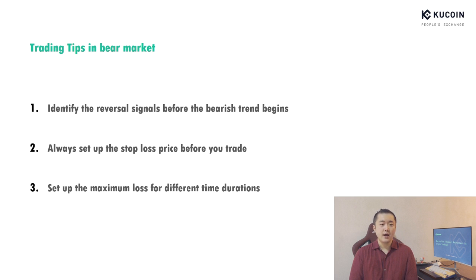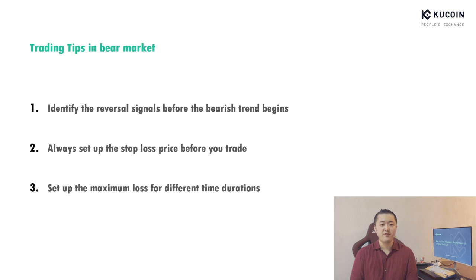Thirdly, I really recommend you to set up your maximum loss for different time durations. For example, if you plan to trade in one month, you can set up your total loss limit at 10% of your total investment. And if your total loss reaches 10%, you can just quit trading for the rest of the month and start trading again in the next month.